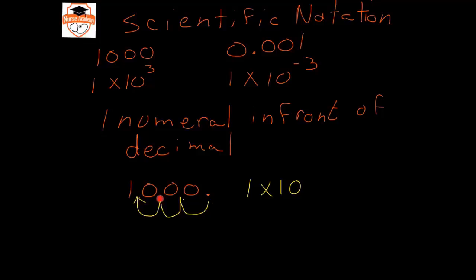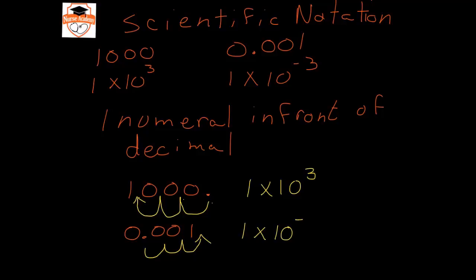Moving the decimal 1, 2, 3 places gives me 1 times 10 to the third. Likewise, for 1 times 10 to the negative 3 written in normal notation, I count how many times I move the decimal to get the 1 — the first non-zero number — in front of the decimal: 1, 2, 3. Since it is a smaller number than 1 and we move the decimal to the right, this gives a negative exponent.